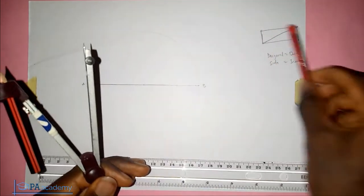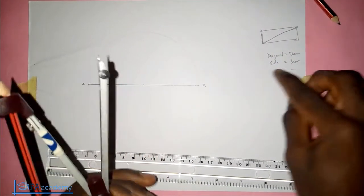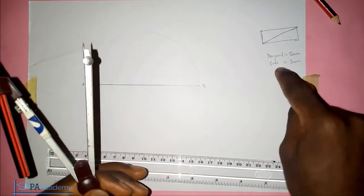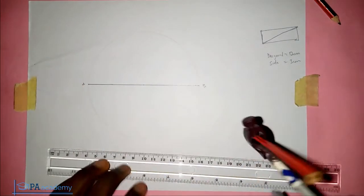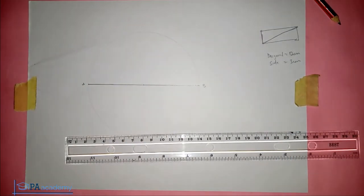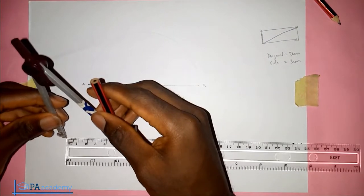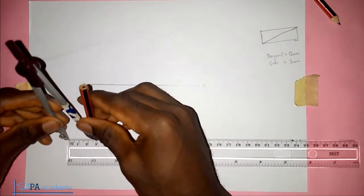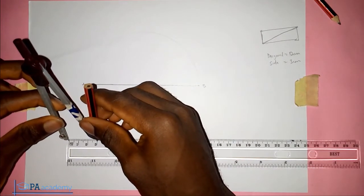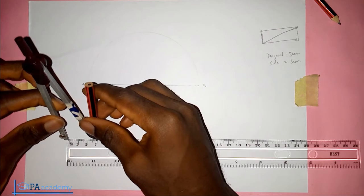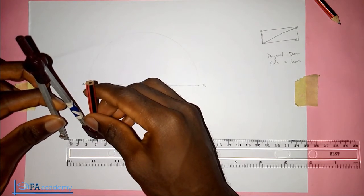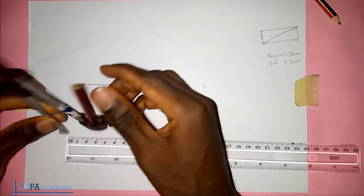Now, the next thing we are going to do is measure the side. We are told that one of the sides is 3 cm. So that means the opposite side—don't forget it is a rectangle, opposite sides of a rectangle are equal. So now let's pick our compass again and measure 3 cm. So this is 3 cm.